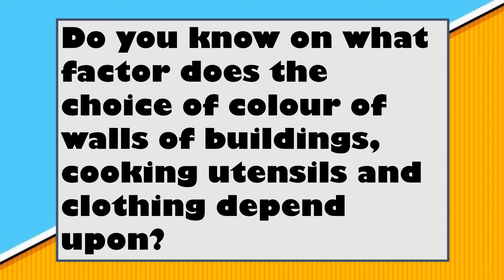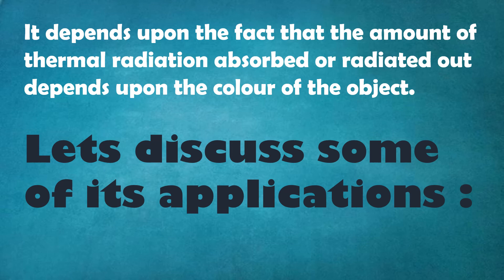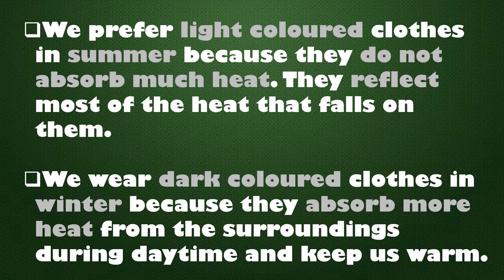The choice of color of walls of buildings, cooking utensils, and clothing depends upon the fact that the amount of thermal radiation absorbed or radiated depends upon the color of the object. We prefer light colored clothes in summer because they do not absorb much heat and reflect most of it. We wear dark colored clothes in winter because they absorb more heat from the surroundings and keep us warm. The bottom of cooking utensils is painted black while the sides are kept sparkling bright, resulting in maximum absorption of heat from the bottom and minimum radiation from the sides. Radiators of cars are painted black to radiate or give out more heat.